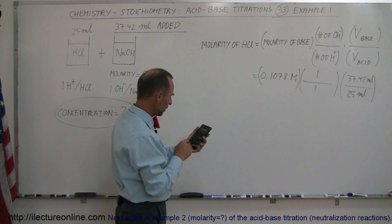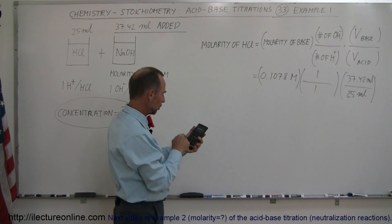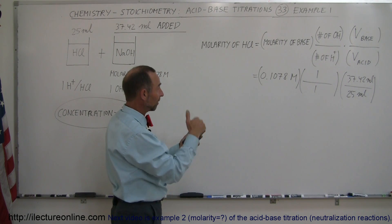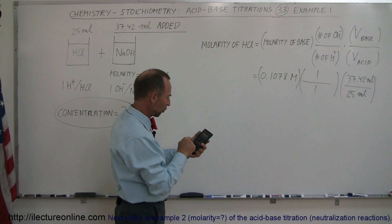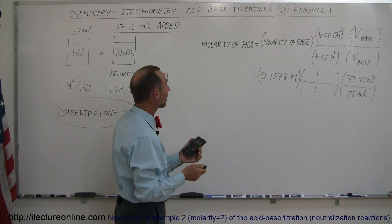So, anyway, the ratio is 1 to 1. So, I have 0.1078 times 1 divided by 1 times 37.42 divided by 25. And that means that the concentration